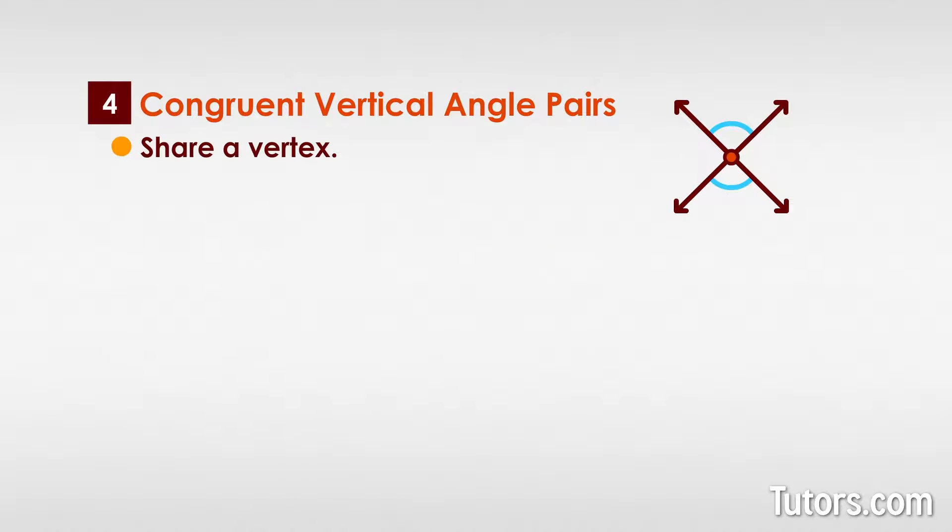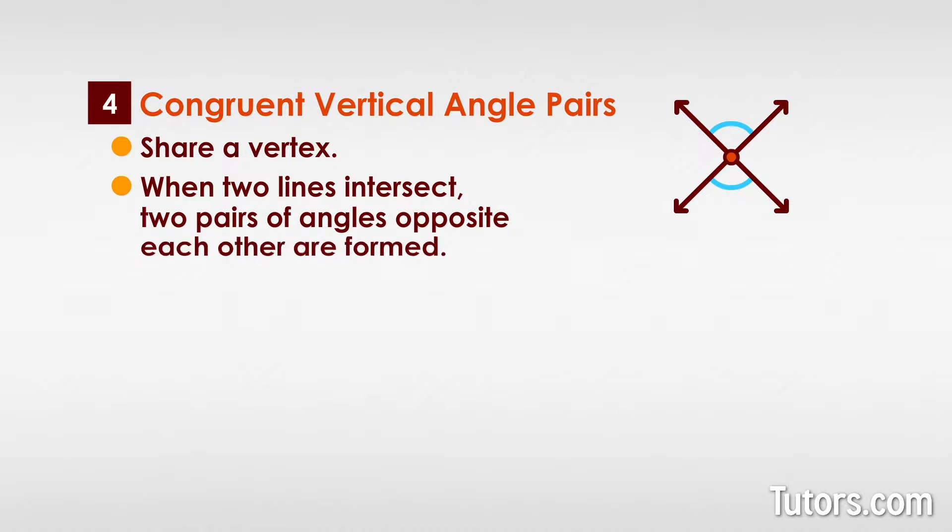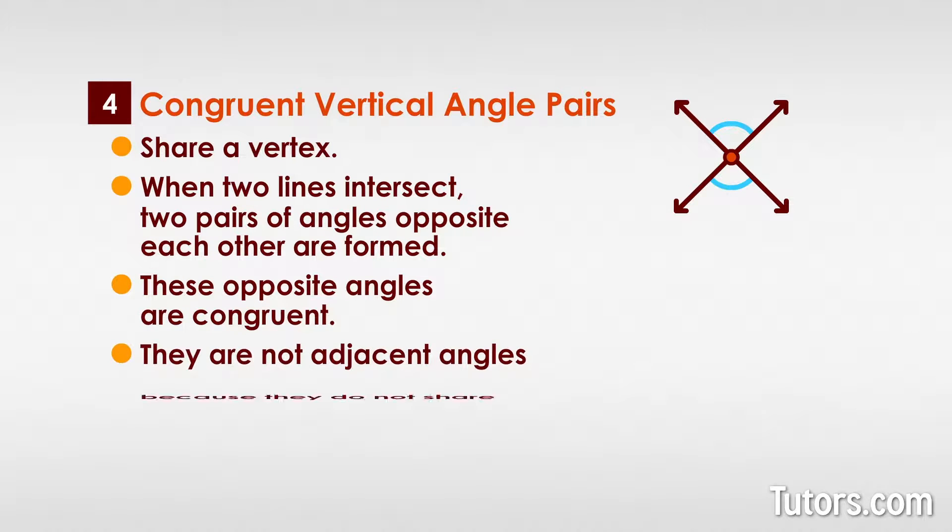Vertical angles share a vertex. When two lines intersect, two pairs of angles opposite each other are formed. These opposite angles are congruent. They are not adjacent angles because they do not share a common side.